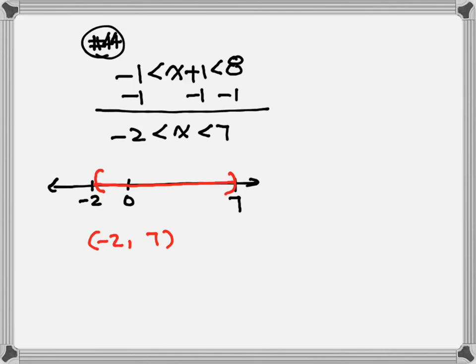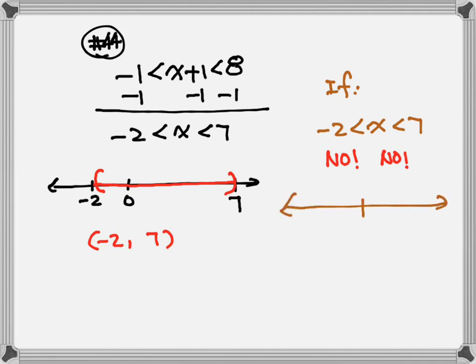Let me show you an if using the same numbers: negative 2 is less than x less than 7. When you draw your number line with 0, negative 2, and 7, make sure the spacing is correct — 7 is a little farther away from 0. Do not make the spacing the same for negative 2 and 7. Make sure your spacing reflects the actual distances.